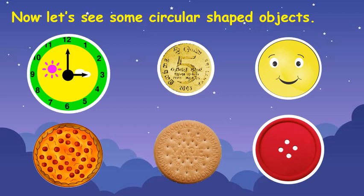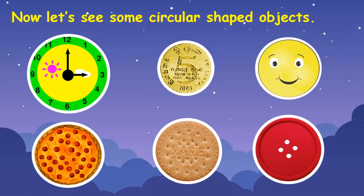Can you all see? Now look at this Mari biscuit. What is the shape of this Mari biscuit? It is round in shape and it looks like a circle. Children, look at this pizza. Can you all see? What is the shape of this pizza? It is round in shape and it looks like a circle. So this pizza is a circular shaped pizza.